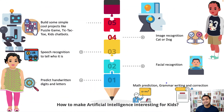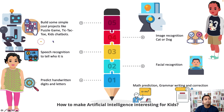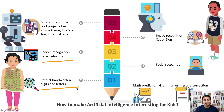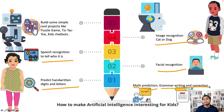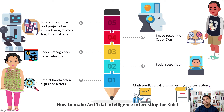How to make artificial intelligence interesting for kids? Build some simple cool projects like a puzzle game, TikTok game, kids chatbots, speech recognition to tell who it is, predict handwritten digits and letters, image recognition for cat or dog, facial recognition, math prediction, and grammar writing and correction as well. These are examples of how we can make kids more interested in AI and machine learning. So let's join our hands and teach AI to kids.